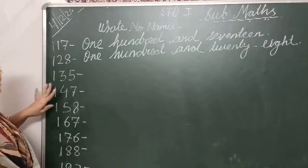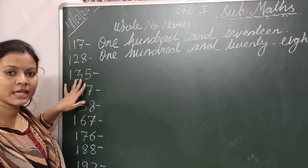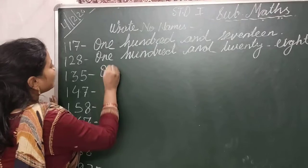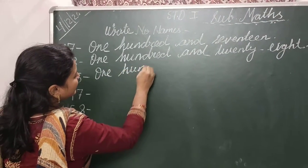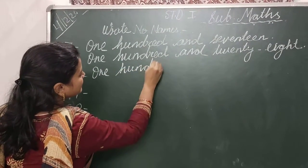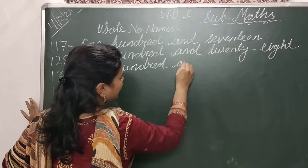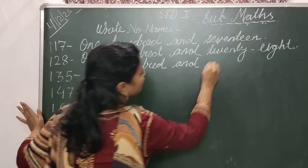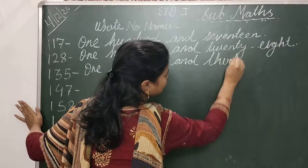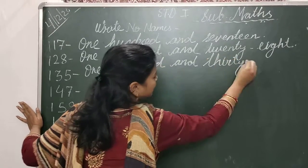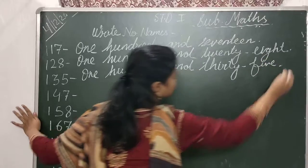Then 135. Okay? O-N-E, one hundred, H-U-N-D-R-E-D, and thirty, N-D, H-I-R-D-Y. Let's see — five, F-I-V-E. One hundred and thirty-five.